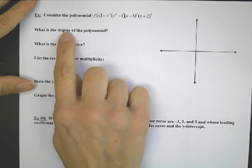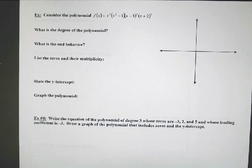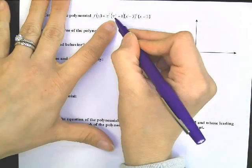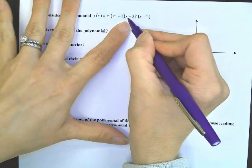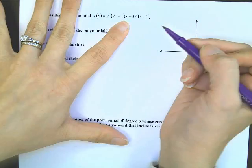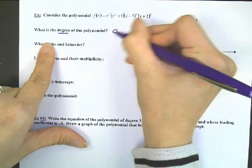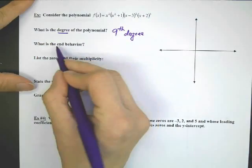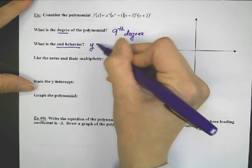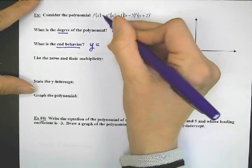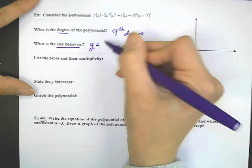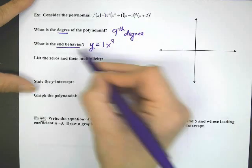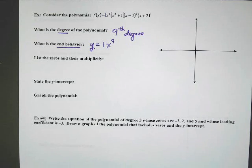All right, let's consider this polynomial. What's the degree? Degree means you add up all the x's. Here's 2 x's, there's 2 x's — I'm up to 4. That's another 2 x's — that's 6 — plus 3 more makes 9. So what's the degree? You would say a 9th degree polynomial, and that's how you write it — 9th degree.